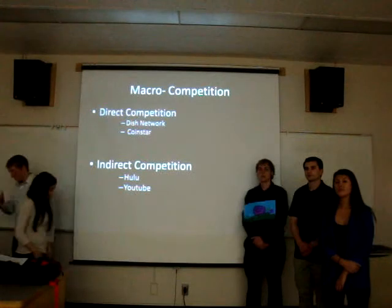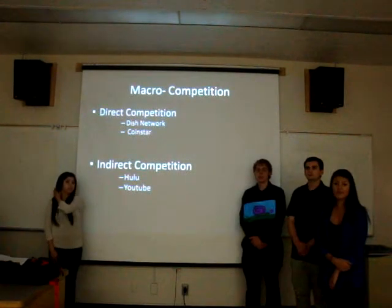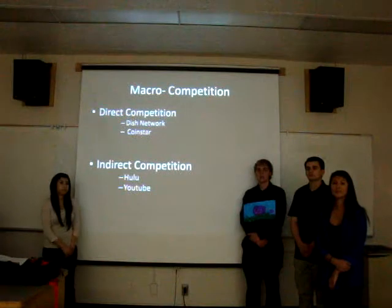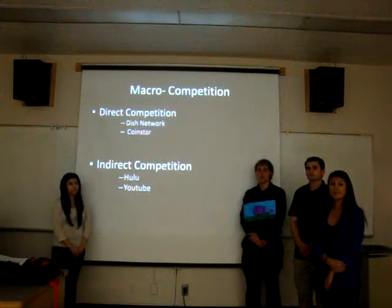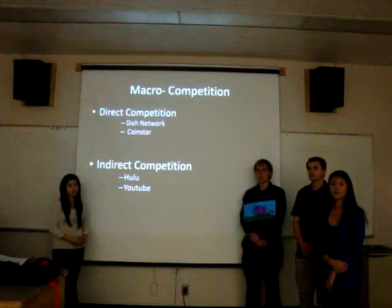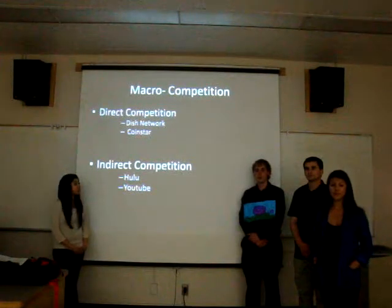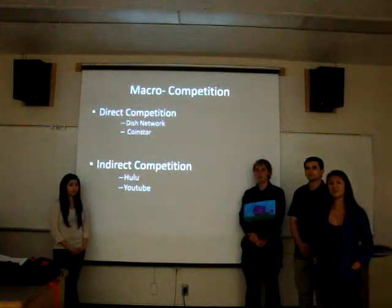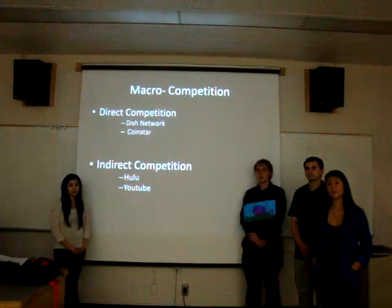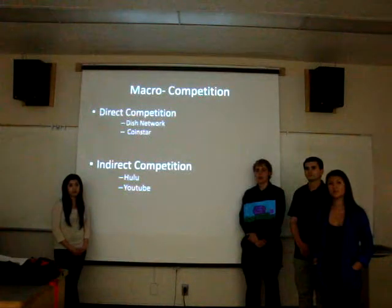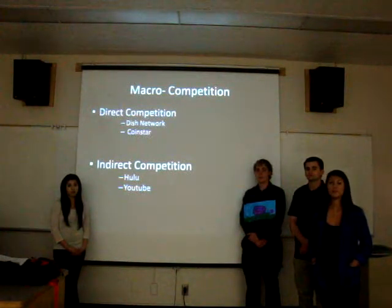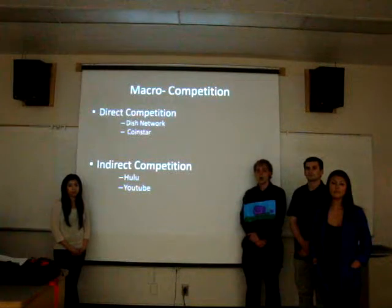There are two types of competition: direct competition and indirect competition. Direct competition consists of the two major players, Dish Network and Coinstar. Dish Network owns Blockbuster and Coinstar owns Redbox. Dish Network competes by using brick-and-mortar stores, kiosk systems, and videos by mail. Coinstar competes by only using the kiosk system. The indirect competition consists of video streaming — such players as Hulu and YouTube, which offer very inexpensive or free online streaming of TV shows and movies.